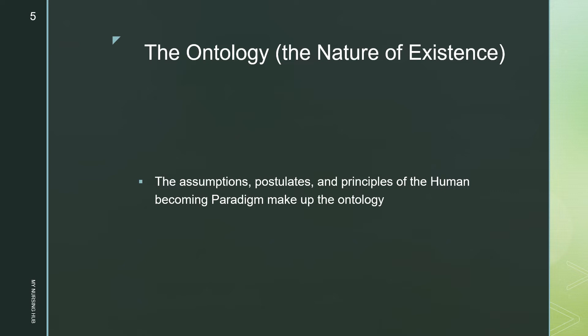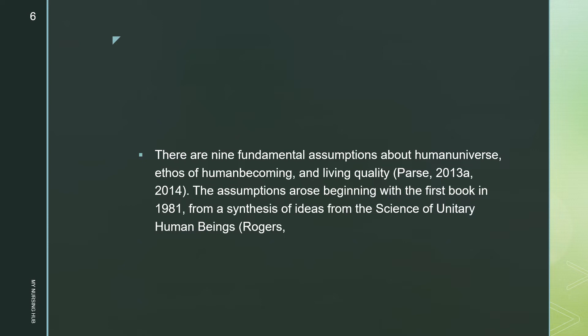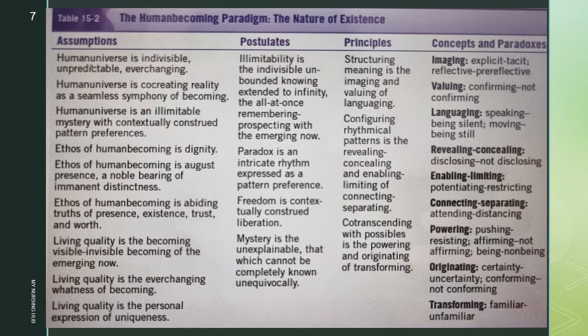Let's see the ontology, or the nature of existence, of Parse's theory. The assumptions, postulates, and principles of the Human Becoming paradigm make up the ontology. In the ontology there are nine fundamental assumptions about human universe, ethos of human becoming, and living quality. These assumptions are ultimately turned into three themes, which we will see in the next slides.